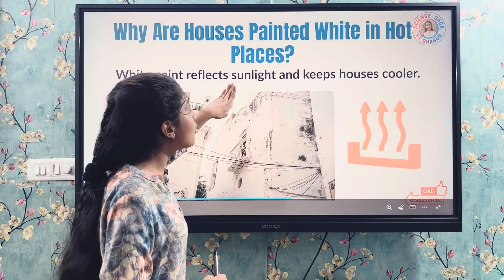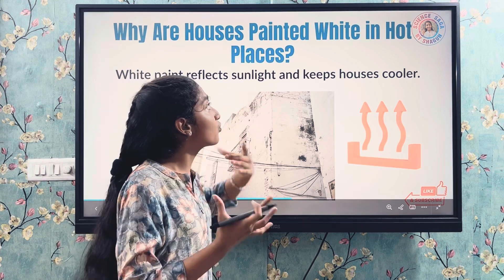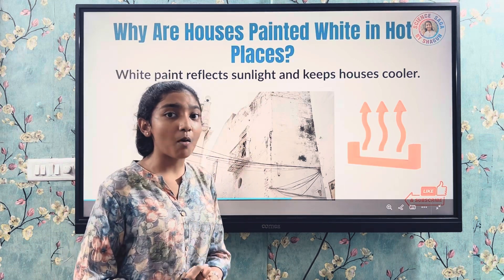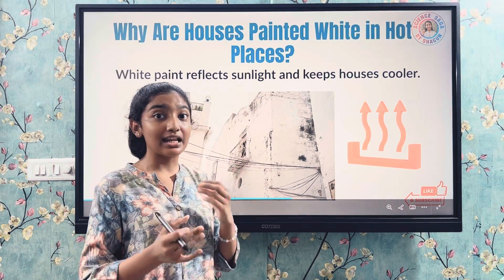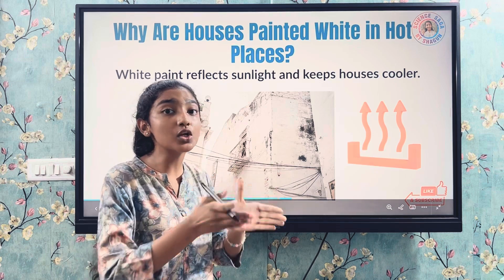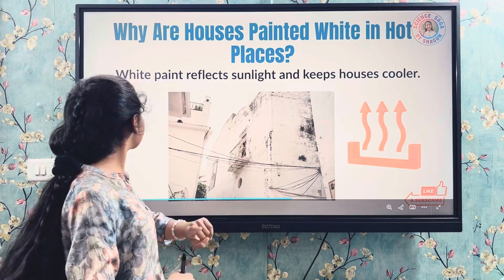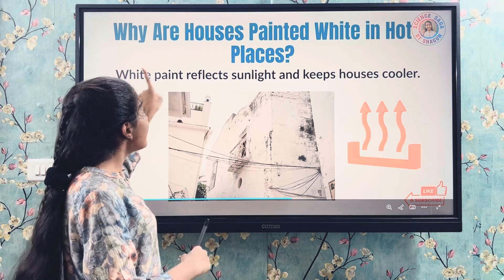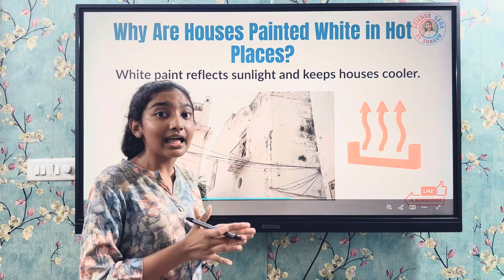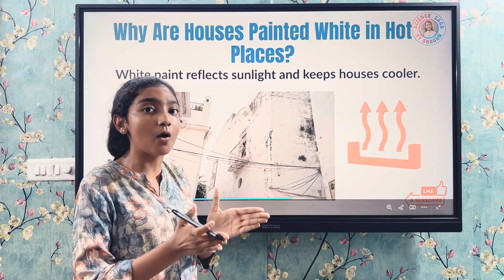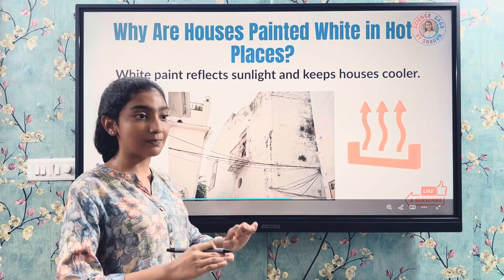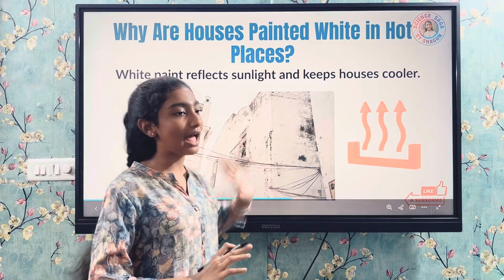Houses painted white in hot places — just like our body needs light clothes in summers. White paint reflects the sunlight and does not let the house get warm, keeping the house cool and comfortable.